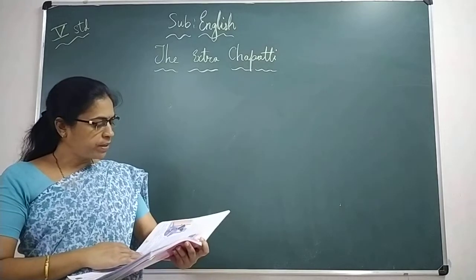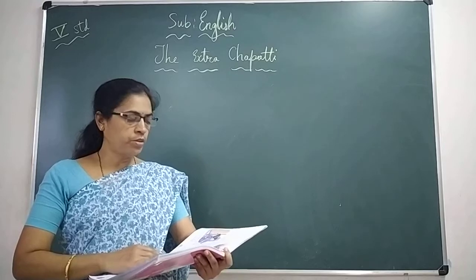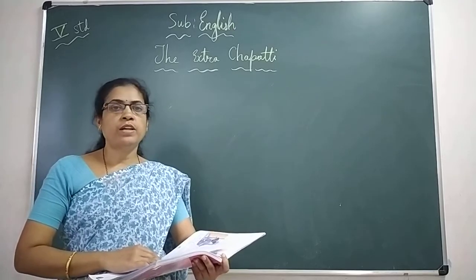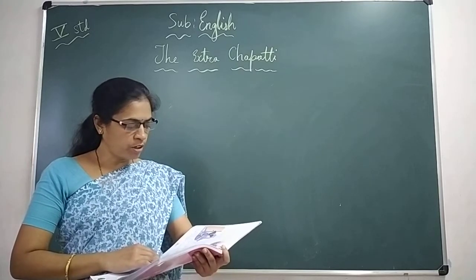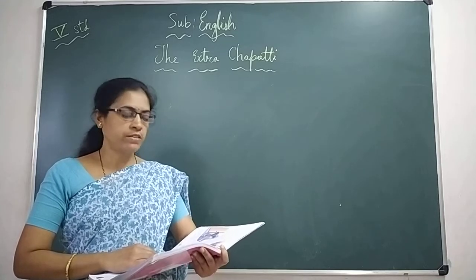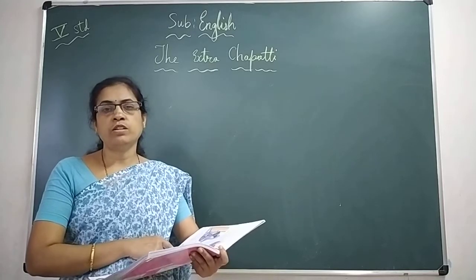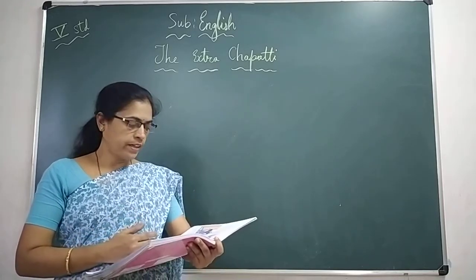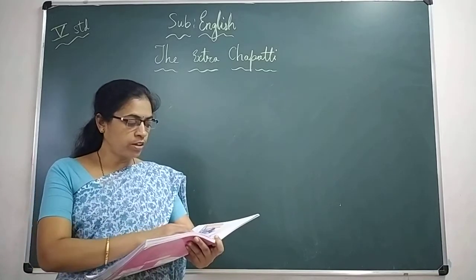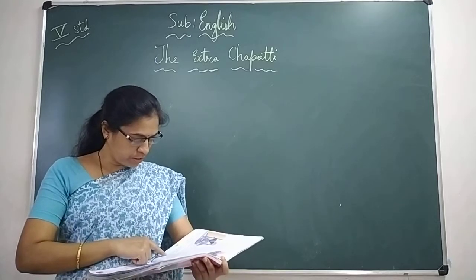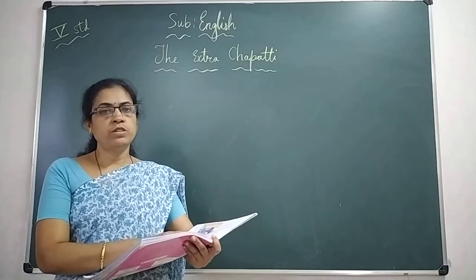The hunchback came, picked up the chapati, and muttered the same words again: 'The evil you do remains with you. The good you do comes back to you.' Saying this, the hunchback went on his way, ignorant of the turmoil within the woman's mind. Ignorant means he was not knowing what was going on in her mind. Turmoil means a state of confusion and anxiety.